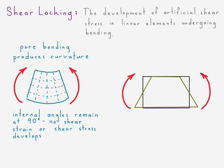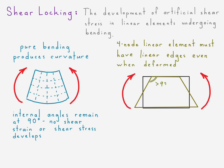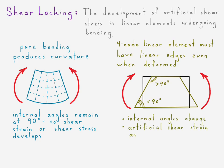But if we look at our four-node linear isoparametric quadrilateral element, those edges must remain straight — they must remain linear. If that's the case, these internal angles will change; they will deviate from 90 degrees. Because they deviate from 90 degrees, artificial shear strain develops. And due to Hooke's Law, that means artificial shear stress develops.